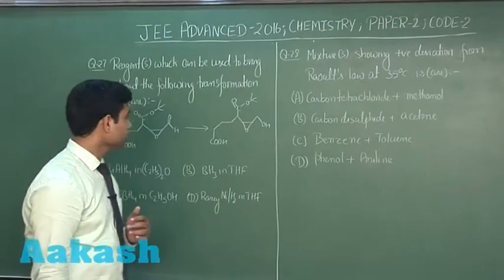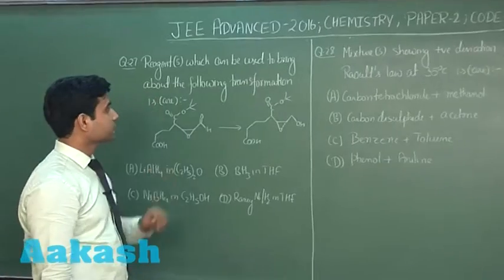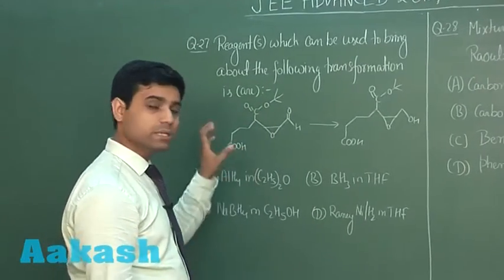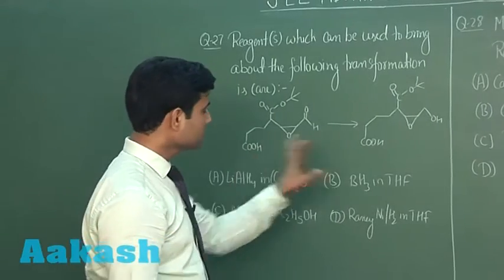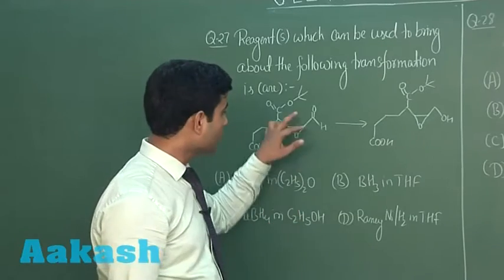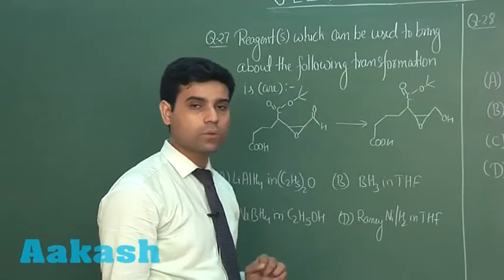So, these are the next questions. We have reagent or reagents which can be used to bring about the following transformation. This is the transformation we have. In this transformation we can see only the aldehyde group is reducing to alcohol.